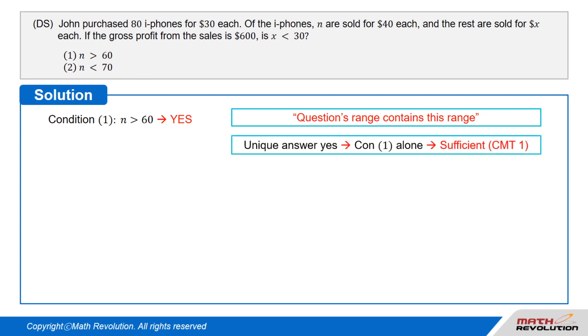Unique answer. So, the condition is sufficient by CMT1, which means that the answer must be in terms of a unique yes or no. This is a precise solution. Remember that Q is K. Question is the king.